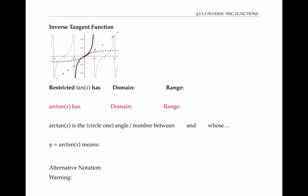In any case, based on our choice, the restricted tan x function has domain from negative pi over two to pi over two, and range from negative infinity to infinity. Therefore, arc tan of x has domain from negative infinity to infinity, and range from negative pi over two to pi over two.